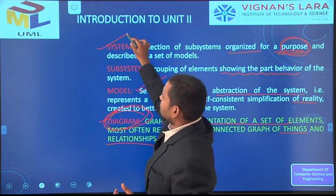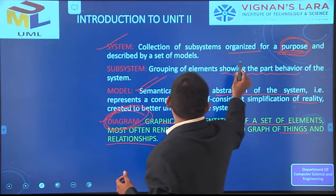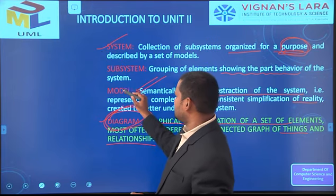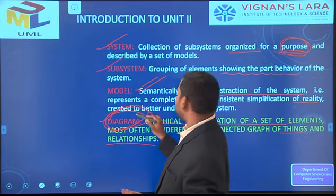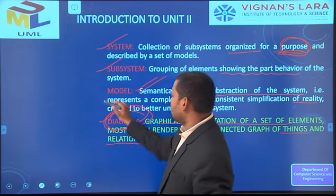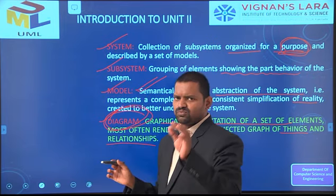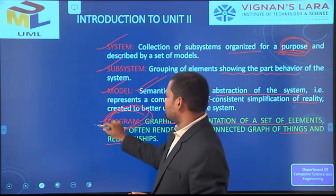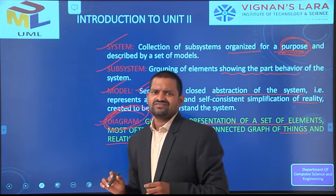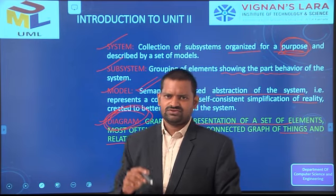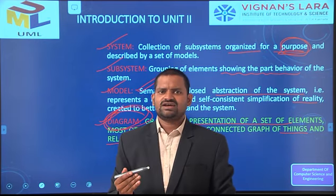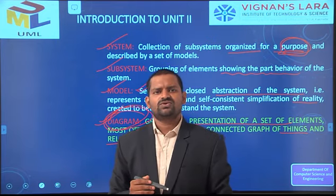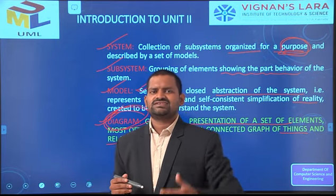A system in the real world is designed for a purpose. A subsystem contains the part behavior of the system. A model is the blueprint of the system or real world problem. A diagram is the pictorial representation of a particular system.